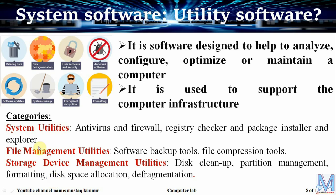Examples of system utilities are antivirus, firewall, registry checker, package installer, and file explorer. Antivirus is software used to remove viruses that enter a computer or cell phone from the internet or any external devices.